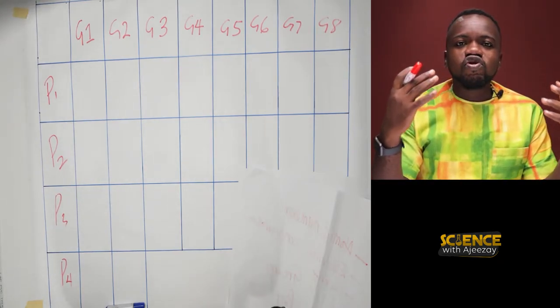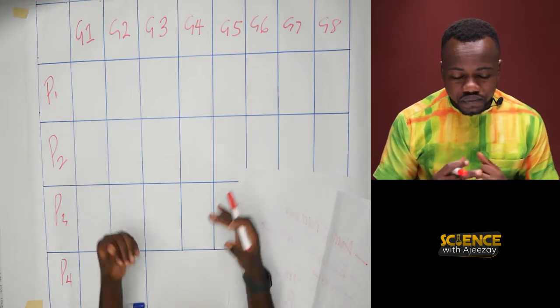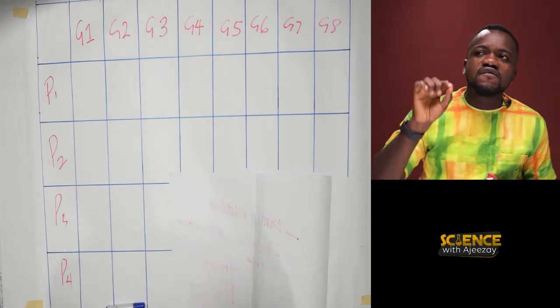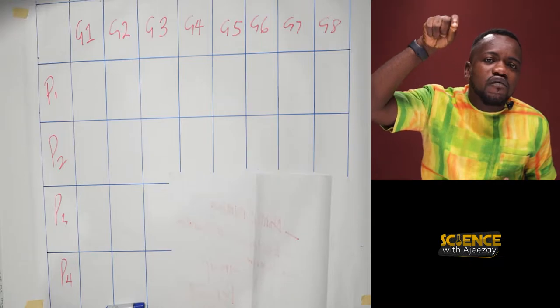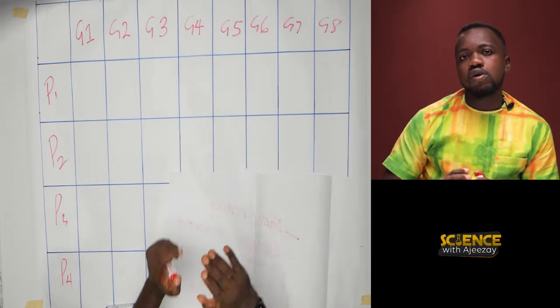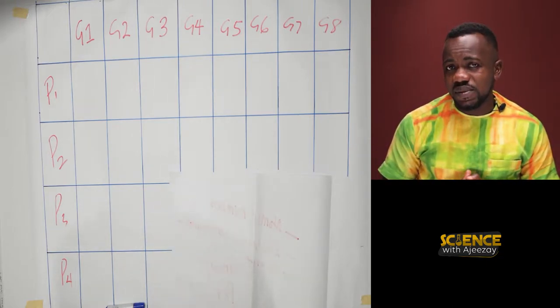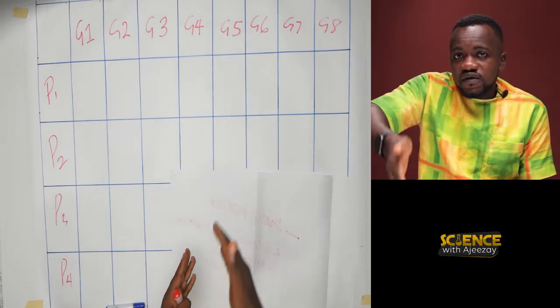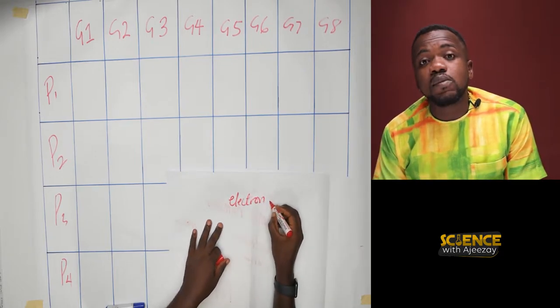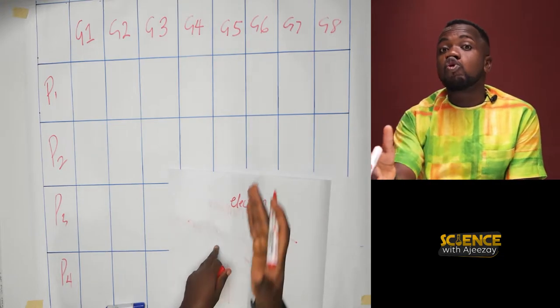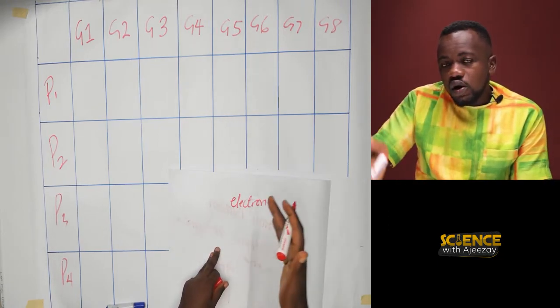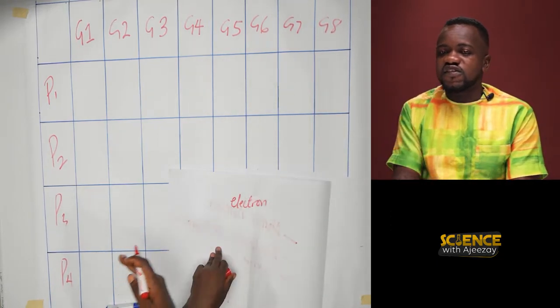Now let's talk about how to get the period and then the group. Simply, the group of an element is the valence electrons or the number of electrons in the outermost shell. The number of electrons in the outer shell tells the group of the atom or the element. Then the number of shells or energy levels of the atom tells its period.